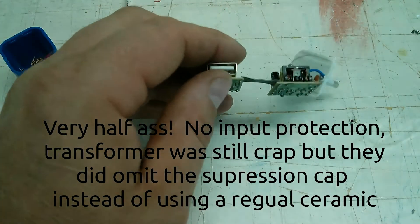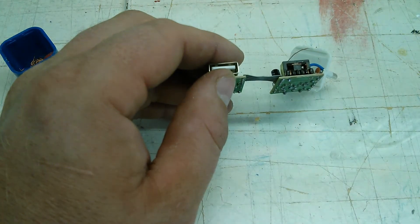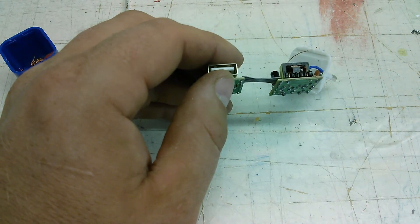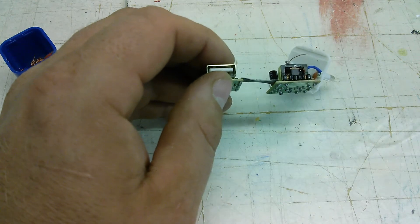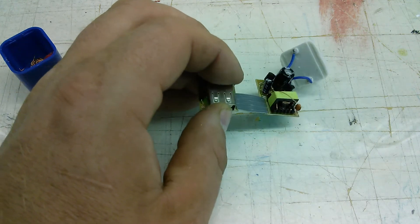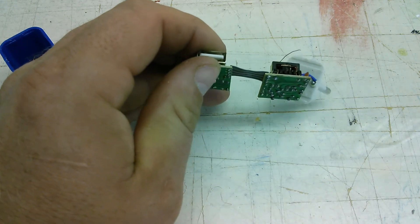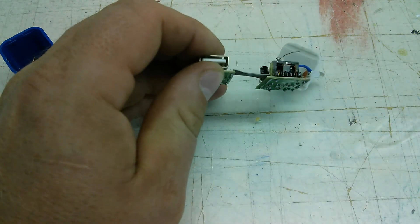The transformer was even better. It at least had a single layer of tape between the primary and secondary. Whereas this one, it looks like there's nothing, just the enamel coating separating, and if that ever fails...